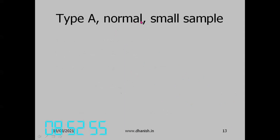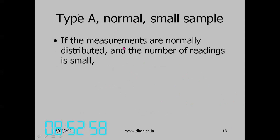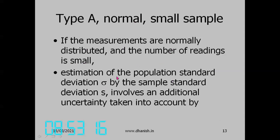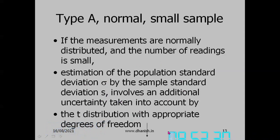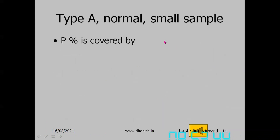The next case is Type A assuming normal distribution with a small sample. If the measurements are normally distributed but the number of readings is small, then the t-distribution applies. Estimation of the population standard deviation σ by the sample standard deviation s carries additional uncertainty, which the t-distribution with appropriate degrees of freedom accounts for. Degrees of freedom ν = n − 1.